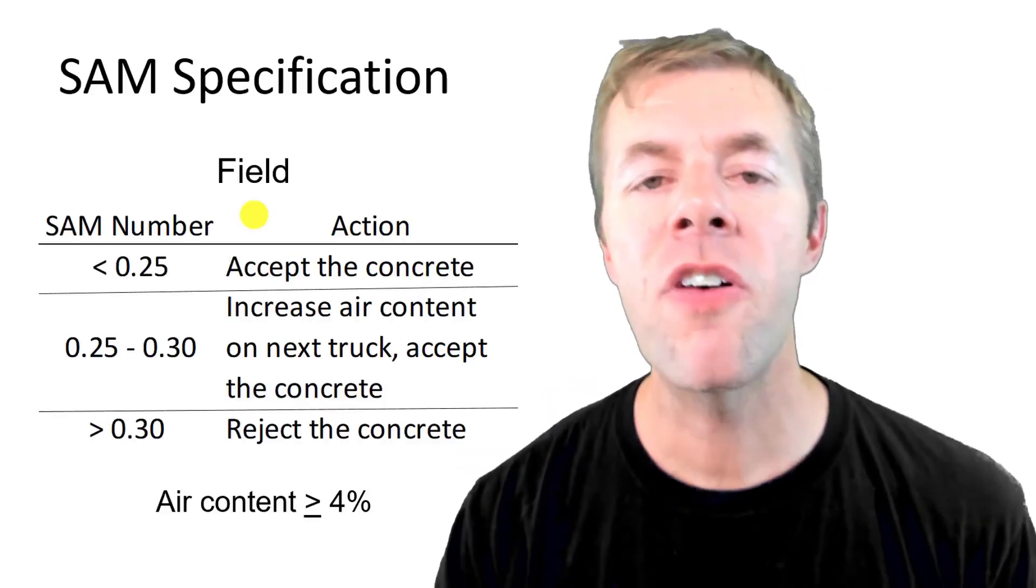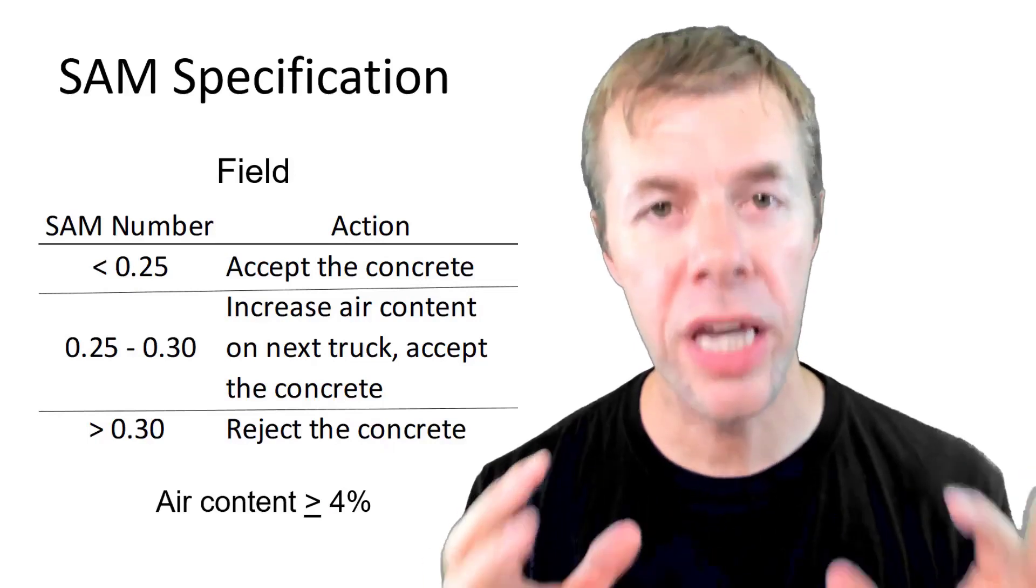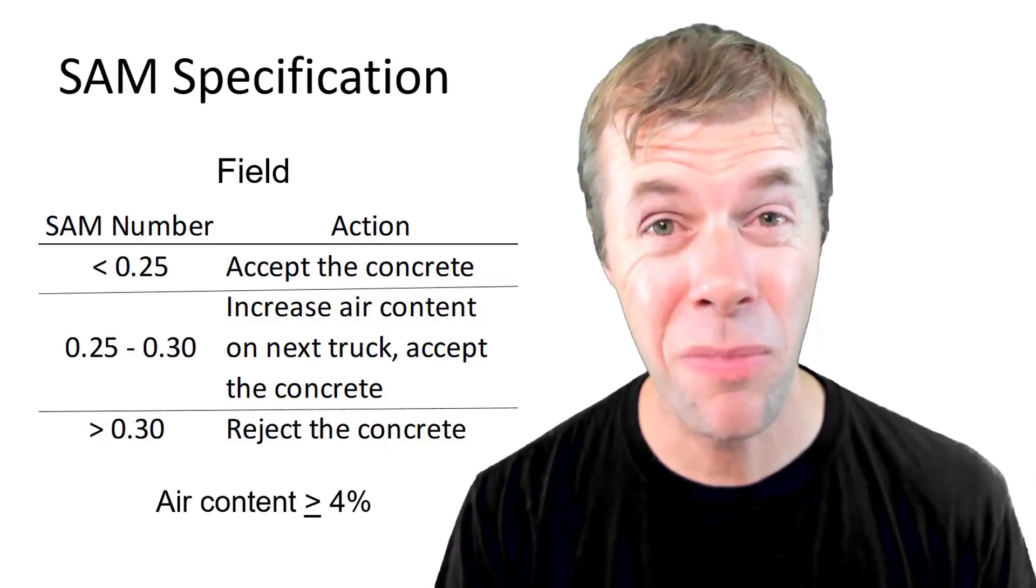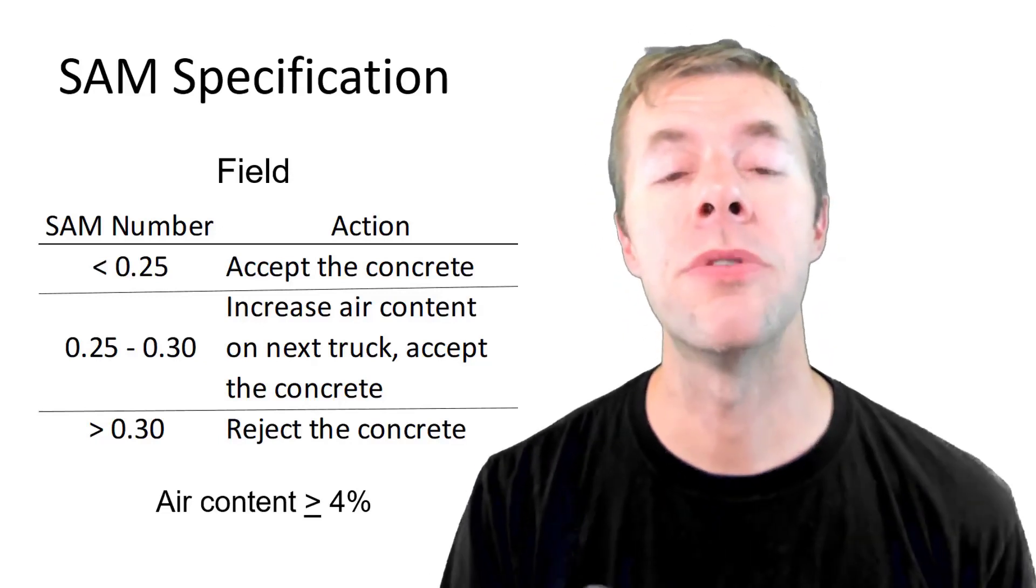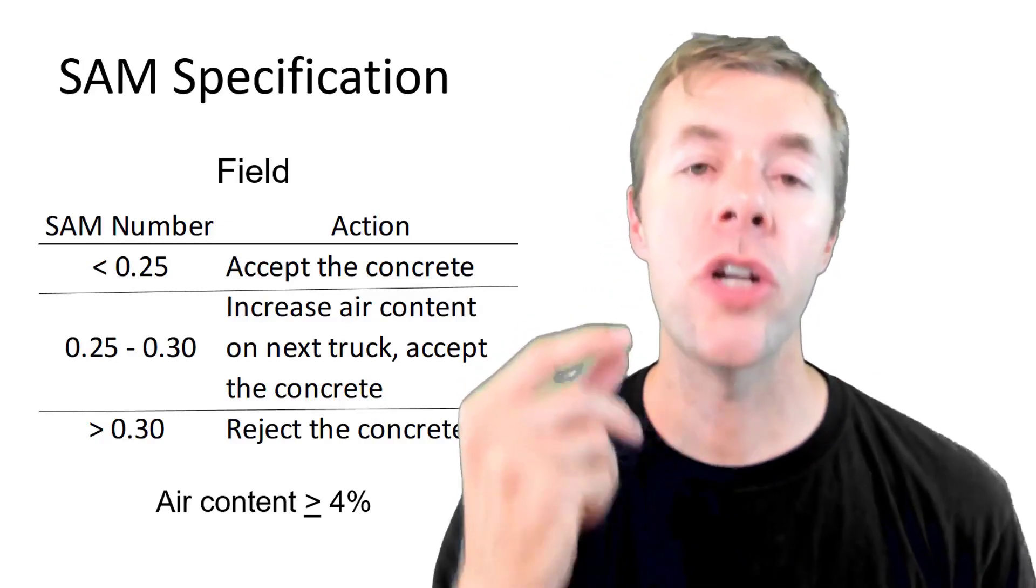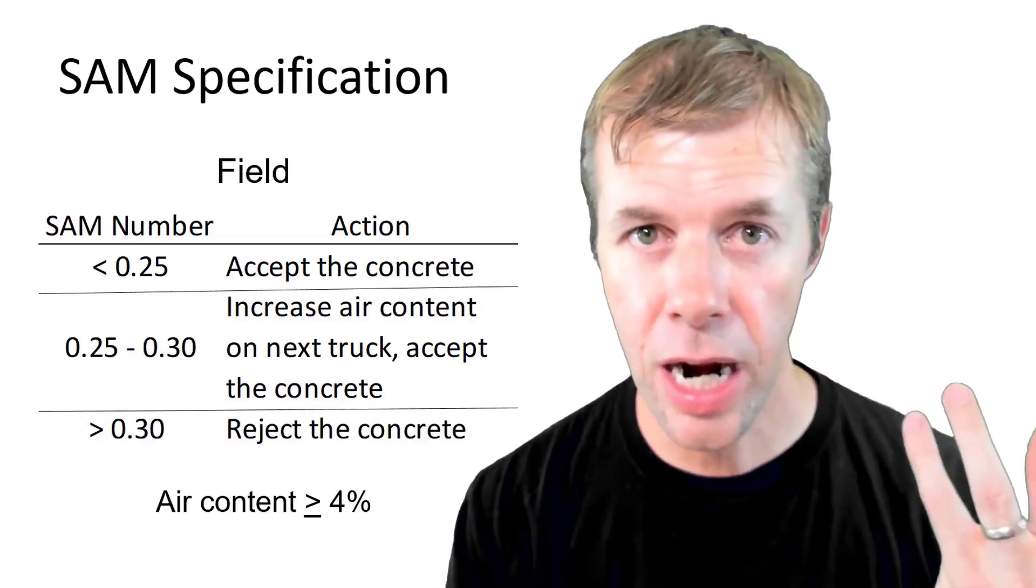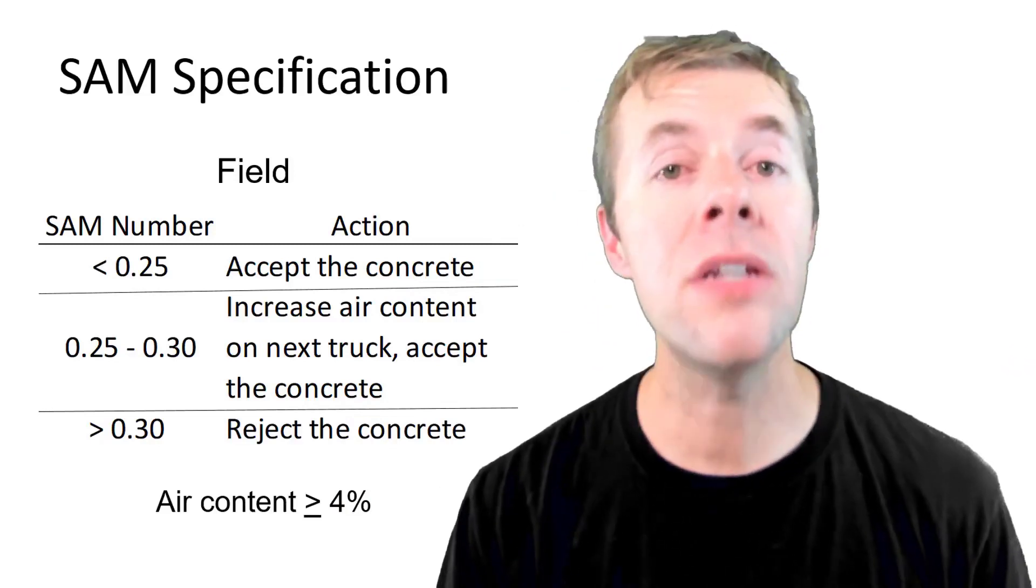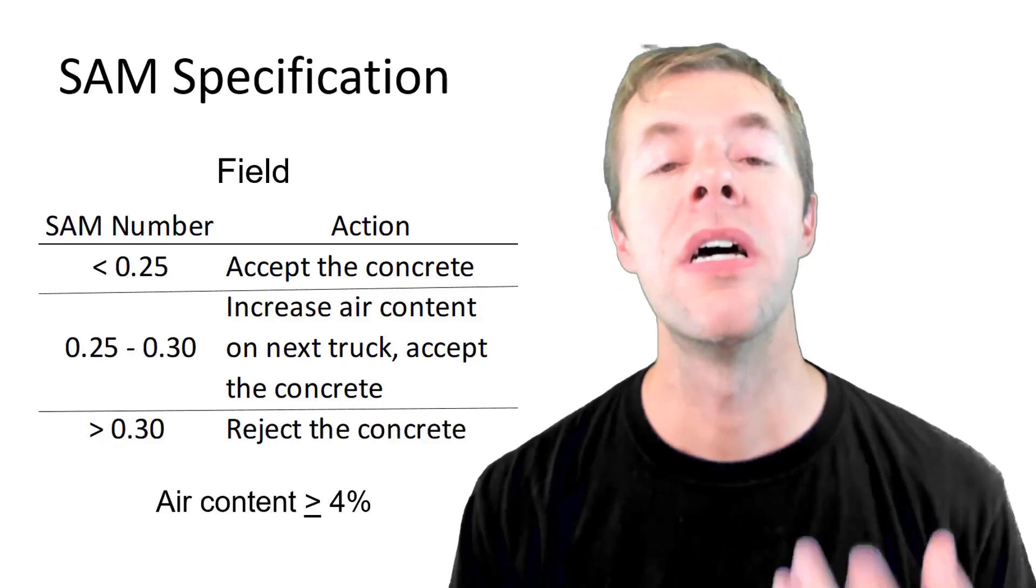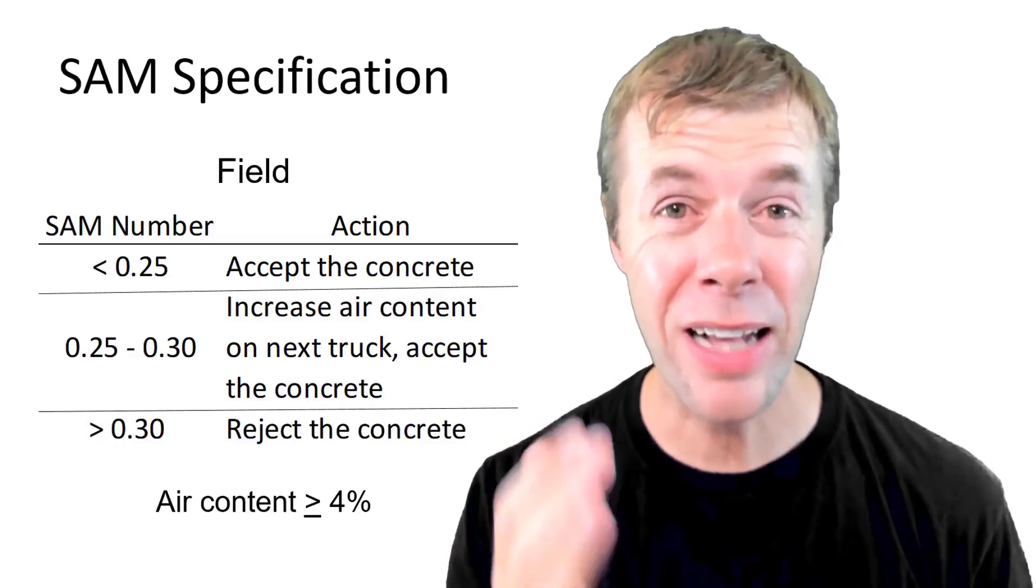First, SAM number is less than 0.25, accept the concrete. It's just fine. The large majority of the time that's where you should be. Sometimes you'll be between 0.25 and 0.30. That should be an action limit. The contractor increases the air content on the next truck, increase the air, SAM number should go down, but accept the concrete and place it. Then if your SAM number ever gets above 0.30, reject the concrete because remember that's the cliff of doom. And your air content always has to be greater than 4%.